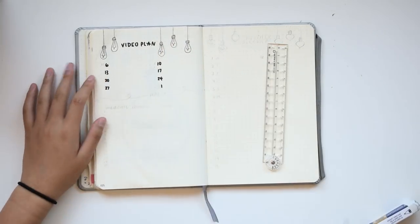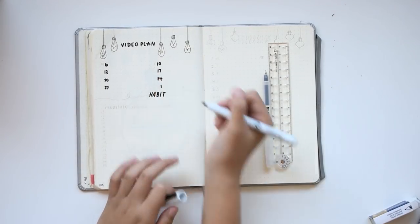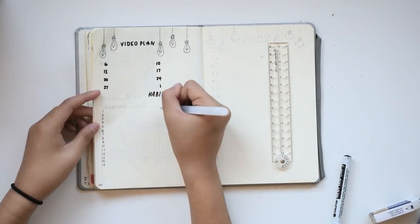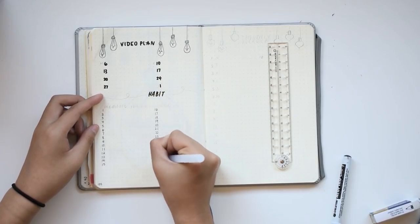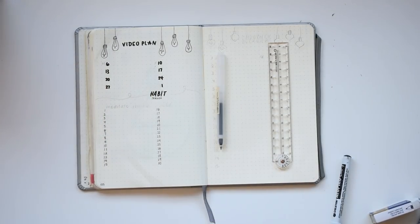Because I used up my Uniball Signo pen, which is the pen that I normally use, and I haven't got any more refills, so I gotta get some more of those. So yeah, first I sketched out my video plan, and next I'm making my habit tracker.